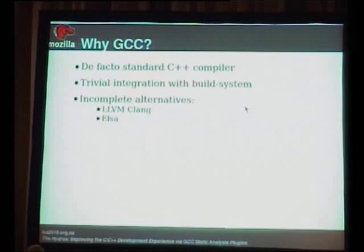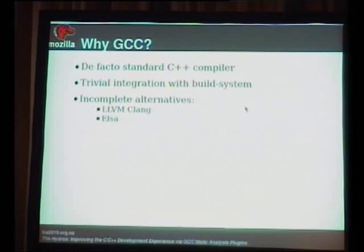Why did we build this on GCC? It turns out C++ is an impossibly hard language to parse. It takes two years for an extremely smart person to write a parser that barely works. It's an ambiguous grammar — you have to instantiate all your types before you can parse part of the source code, so there's actually a feedback loop from the type system into the lexer, which is ridiculous.